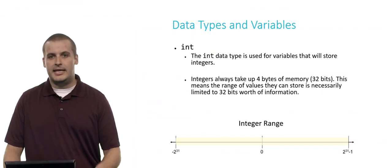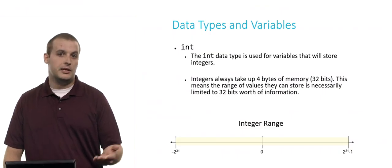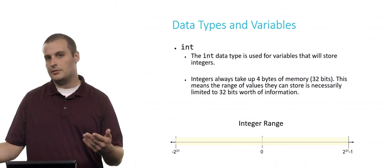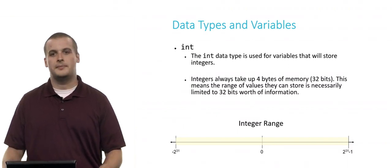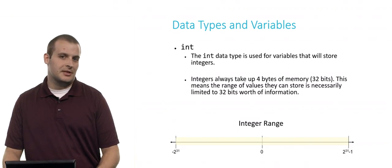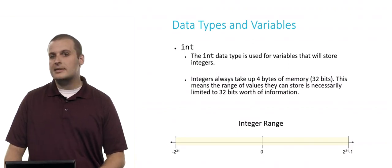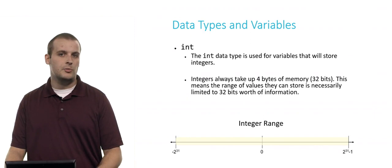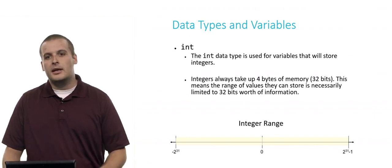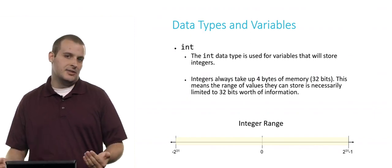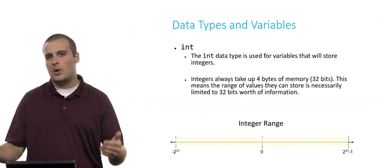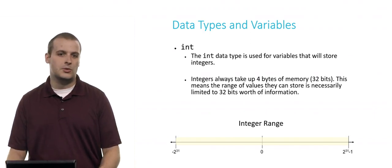The first is int. The int data type is used for variables that will store integer values. So 1, 2, 3, negative 1, 2, 3, and so on. Integers, which is something you should keep in mind for the quiz, always take up four bytes of memory, which is 32 bits. There are eight bits in a byte. So this means that the range of values that an integer can store is limited by what can fit within 32 bits worth of information.